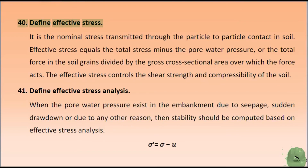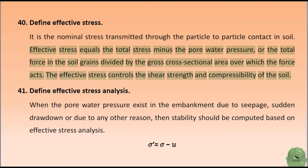Define effective stress. It is the nominal stress transmitted through the particle-to-particle contact in soil. Effective stress equals the total stress minus the pore water pressure, or the total force in the soil grains divided by the gross cross-sectional area over which the force acts. The effective stress controls the shear strength and compressibility of the soil.